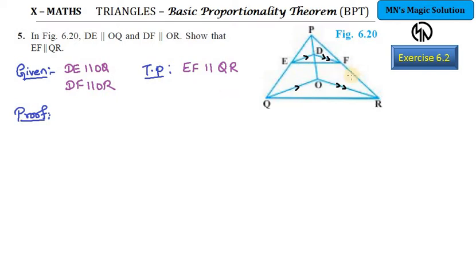Before bringing the proof, let us evaluate things first. In the question you need to prove EF parallel to QR. So what we are going to do is use converse of BPT. We have to prove PE by EQ equals PF by FR. And for this, the common ratio we can use is PD by DO. If we can prove PE by EQ equals PD by DO and also PF by FR equals PD by DO, then from both those ratios we can equate them.